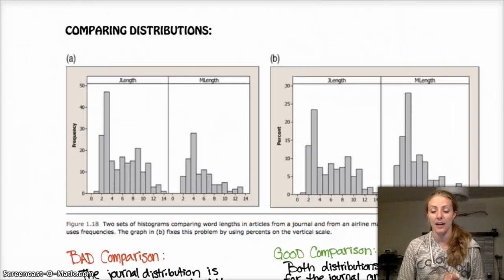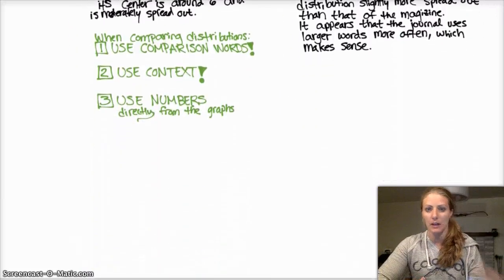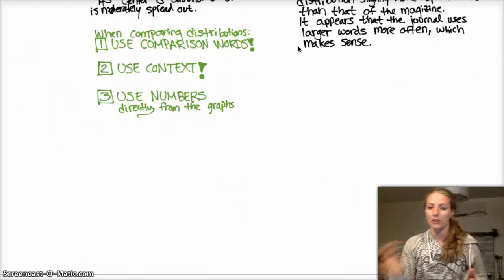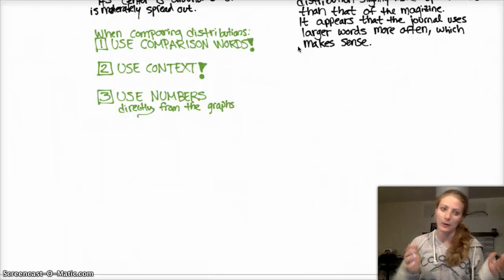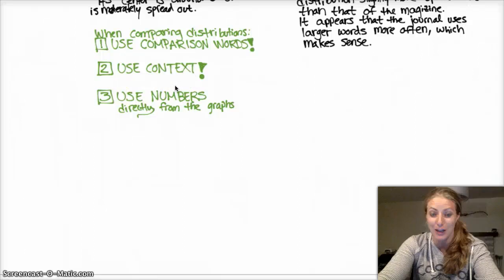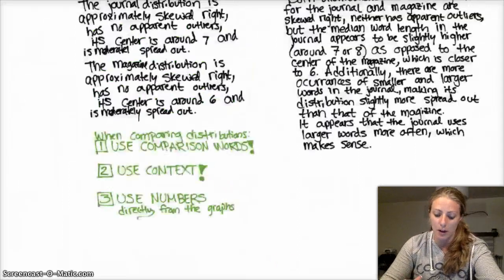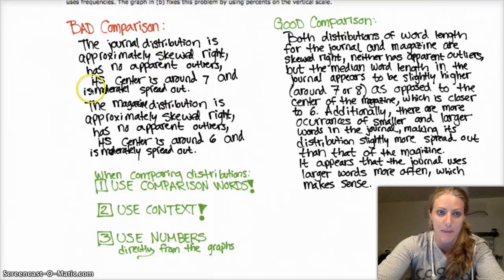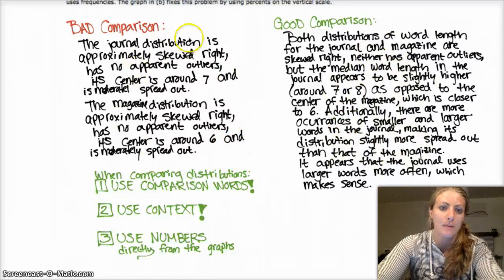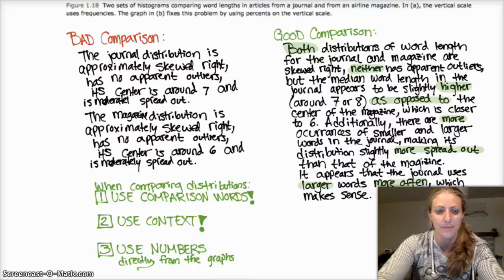The last thing to touch on is how to compare distributions. You'll often be asked to compare distributions. Things to remember: one, use comparison words like larger, smaller, in comparison to. Two, use context - if we're talking about birds and bees, talk about birds and bees. Three, use numbers directly from the graphs - you have to use stats to back up your argument. Here are two examples: this is a bad comparison, this is a good comparison. Note the comparison words I use here and what I don't use here. See you next week!